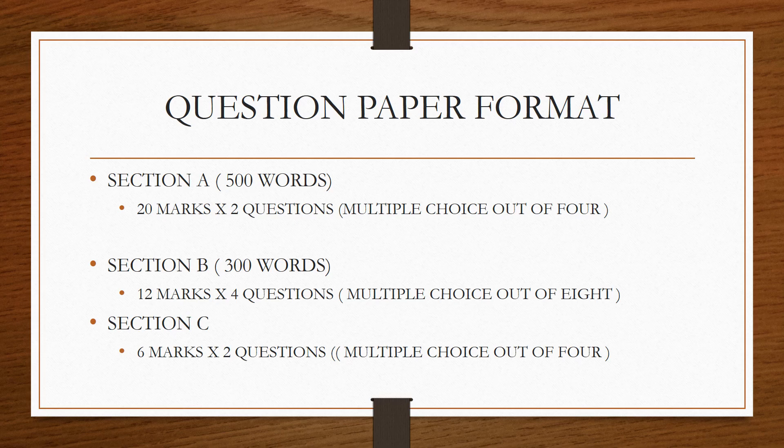Section B has 12 marks for each question, and you have to answer four of them in not more than 300 words, with choices out of eight. Section C is short answers — each question carries six marks, you answer two, and the choice is out of four.